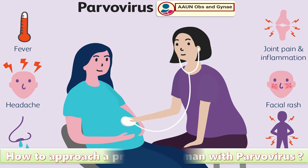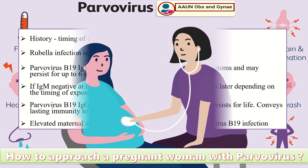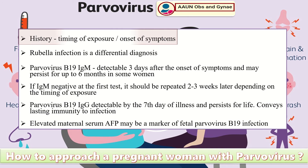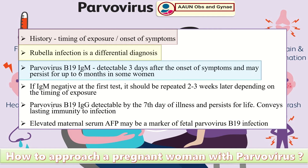To approach a pregnant woman with parvovirus, first take appropriate history regarding the timing of exposure and onset of symptoms. Rubella infection is a differential diagnosis. Parvovirus B19 IgM is detectable three days after the onset of symptoms and may persist for up to six months in some women. If IgM is negative at first test, it should be repeated two to three weeks later depending on timing of exposure.